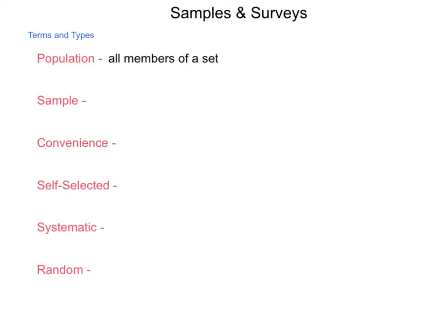First, let's talk about the difference between a population and a sample. The population is simply all members of a set. So if we're looking at people in a certain city, that's the population. If we're looking at boxes of cereals that come off the assembly line, that is your population — whatever set is being studied is your population. The sample is a part or subset of the population. A sample could be as small as one single item or the entire population itself, and it is still considered a subset.